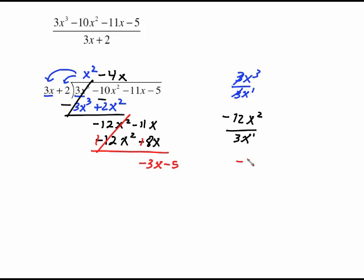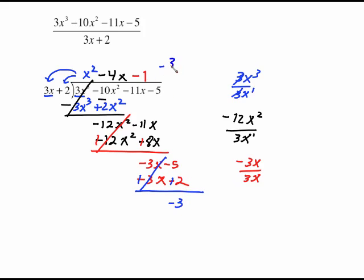Begin again: negative 3x divided by 3x gives us negative 1. Multiply negative 1 times the whole divisor: negative 3x minus 2. Subtract by drawing the line, change the signs. The 3x and negative 3x cancel. Negative 5 plus 2 is negative 3. So bring your remainder up here as negative 3 over 3x plus 2. You can put a plus in between here, or it could have just been minus with a 3 on top.